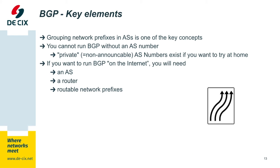Key elements of BGP are AS numbers, and you cannot run BGP without having an AS number. If you want to try an experiment, there are private AS numbers you can just choose and use. Important: you cannot announce them on the internet, but if you want to try at home, that's not a problem.